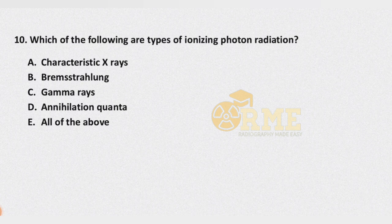Question number 10: which of the following are types of ionizing photon radiation? Options are characteristic X-rays, bremsstrahlung, gamma rays, annihilation radiation, and all of the above. The correct answer is all of the above.